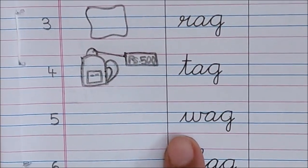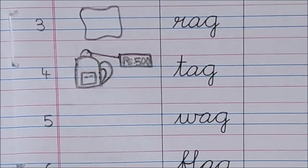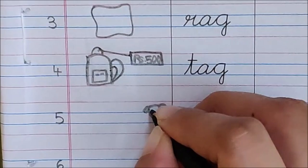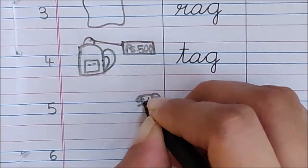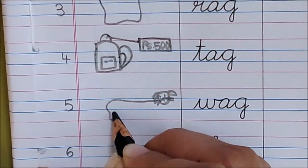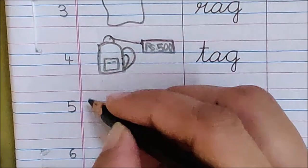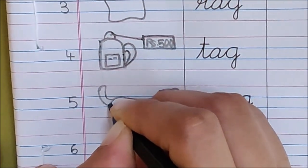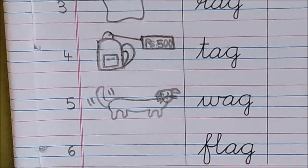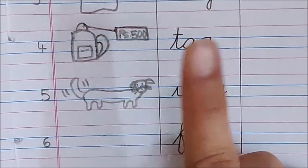V, ag, ga, wag. Wag means jaldi jaldi hillna. Like this. This is a dog. These are the whiskers. And this is his body. And this is his tail. And he is wagging his tail. Wag means hillna. He is wagging his tail. Because he is very happy to be with you. Wag.